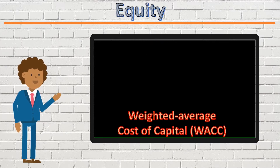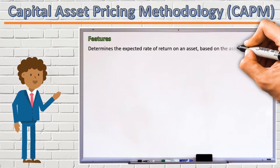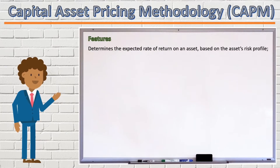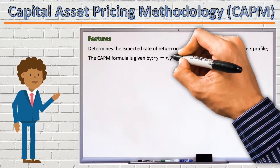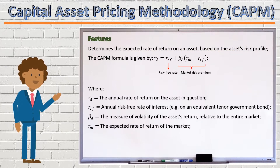The Capital Asset Pricing Methodology, or CAPM, is a method of determining the rate of return on an asset, usually a company's share, based on the asset's risk profile. The CAPM formula is given by the risk-free rate of interest in the economy, plus a market risk premium, and we will see how that is calculated.